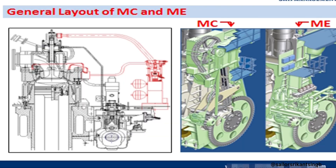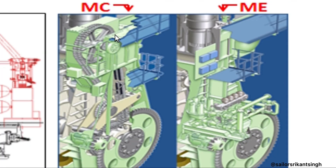In this page you can see the general layout of a marine conventional and a marine electronic engine. You can see the conventional engine has many gears, chain drives, and many things which are attached to the main engine, but in the electronic engine you will not see as many gears.